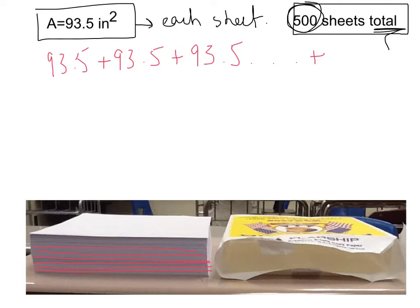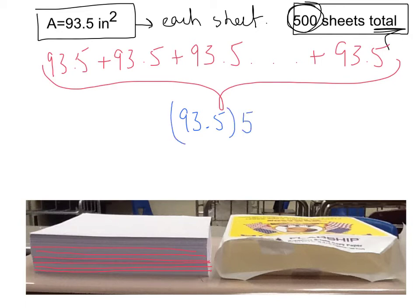Now, that is a lot of addition. So it is much easier for us to take the area, which is 93.5, and multiply it by the total number of sheets, which is 500. The product of these two numbers is 46,750. Since we're talking about volume, our units are inches cubed.